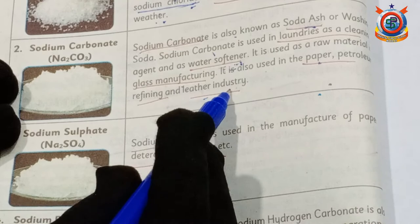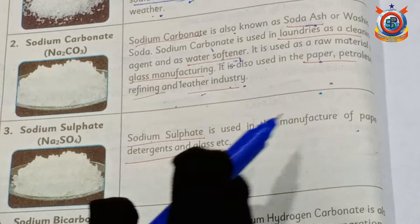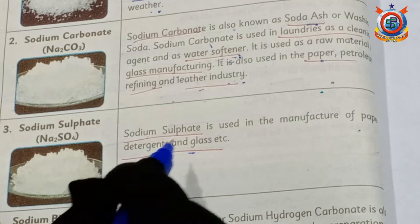The third example is sodium sulfate. Sodium sulfate is used in the manufacturing of detergent, glass, and paper.